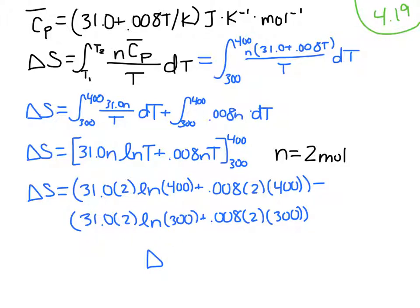We end up with a delta S value of 19.4 joules per kelvin.